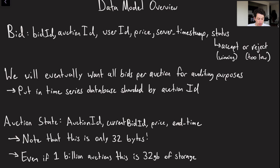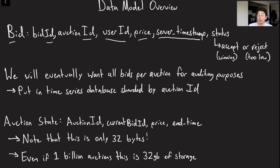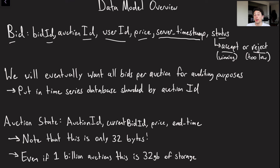Let's go over the data models. A bid has an ID, an auction ID, a user ID, a price, a server-side timestamp — we don't want clients assigning timestamps, as that could mess things up — and a status. A bid can be accepted, meaning it's the current highest at the time of submission, or rejected, meaning it was too low and we'll never count it.